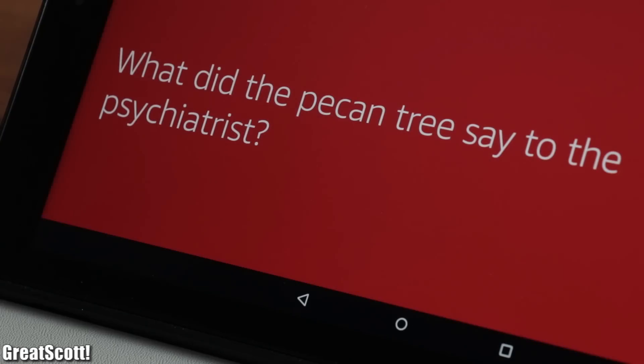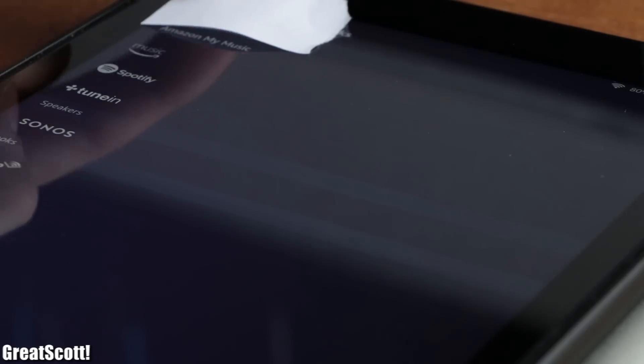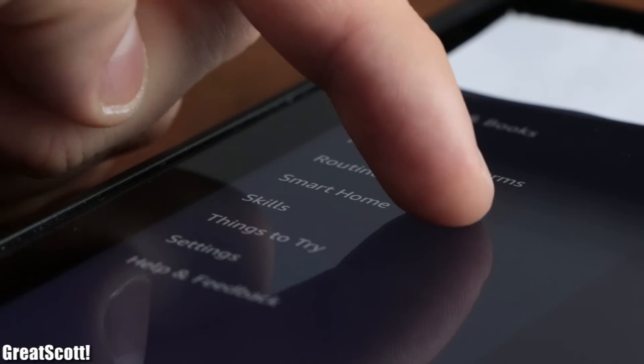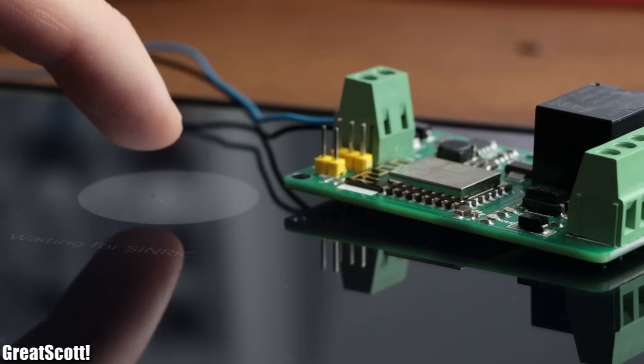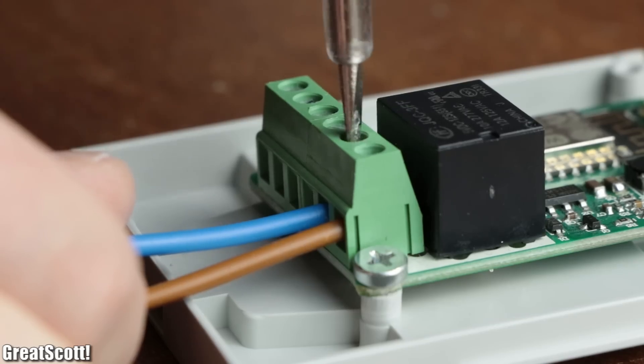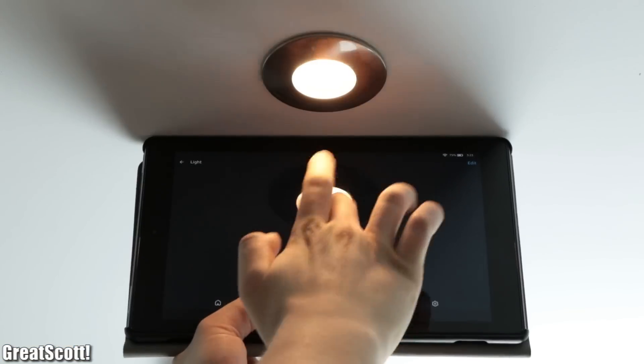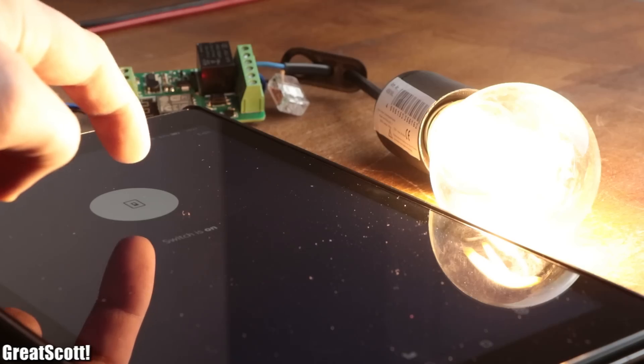What did the pecan tree say to the psychiatrist? I think I'm growing nuts. Of course, there are more useful functions that Alexa can handle, for example home automation. So in this video, I will present you a simple way on how to control a microcontroller outputs with Alexa, which allows us for example to verbally turn on/off the lights in the corridor. Let's get started.